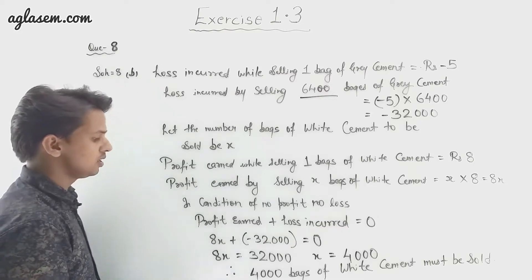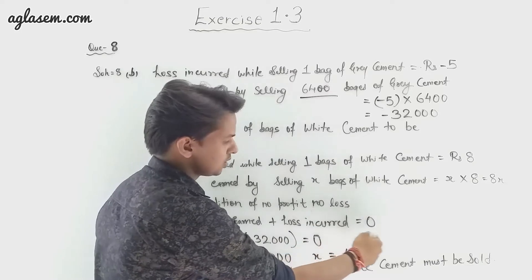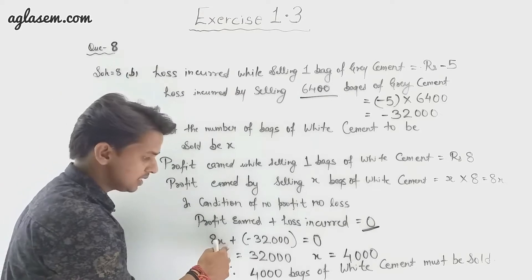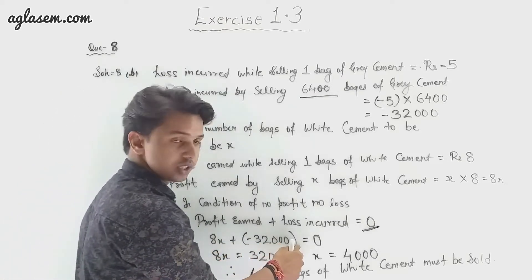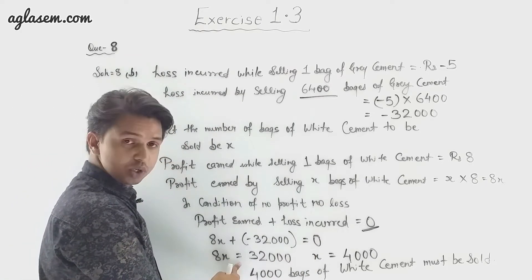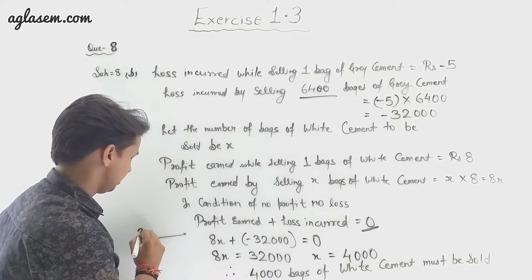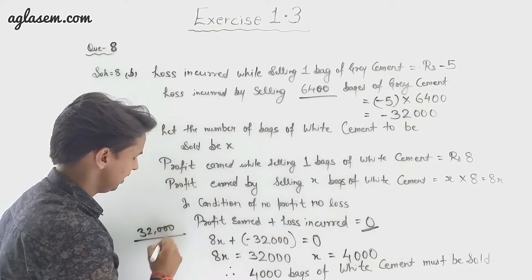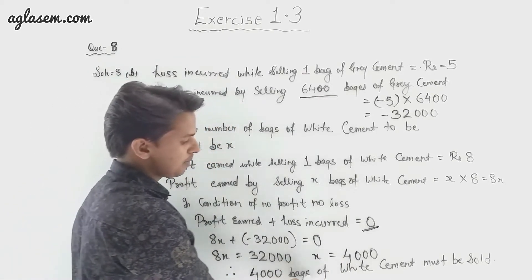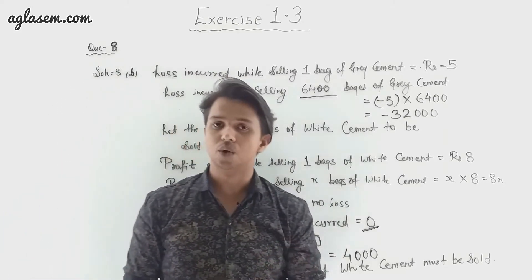Under the condition of no profit and no loss: profit earned plus loss incurred equals 0. So 8x plus minus 32,000 equals 0, which gives 8x equals 32,000. Therefore x equals 32,000 divided by 8, which equals 4,000. So 4,000 bags of white cement must be sold for the company to have no profit and no loss.